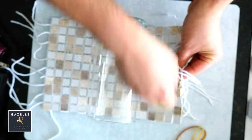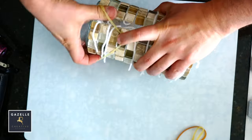I will place a few rubber bands around the vase to keep the tiles in place and tie the strings.